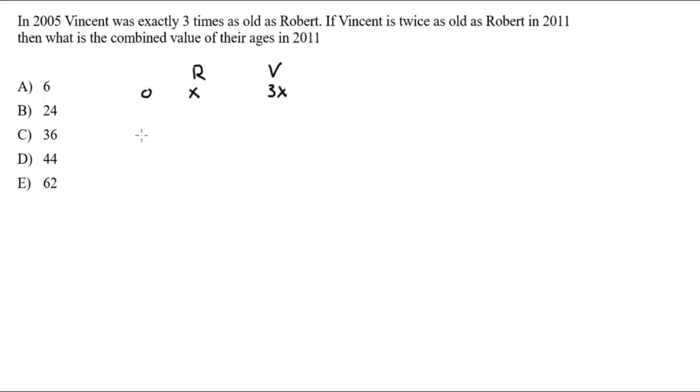So, our next time point is 2011. That is six years in the future. So, we'll put a six here. And what was the age then? Well, Robert is just going to be six years older. So, X plus six. And how old is Vincent now? Well, he's actually two times as old as Robert's current age. So, 2X plus six.